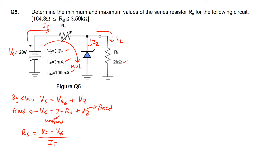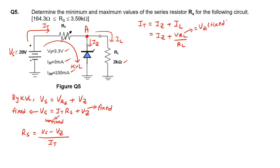Next, we find the equation for It. Placing point A by KCL: It equals Iz plus Il, which expands to Iz plus Vrl over RL. Since the resistor RL is in parallel with the Zener diode, Vrl equals Vz. Since Vz is a fixed value and RL is also fixed, Il is a fixed value overall.